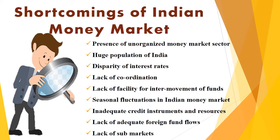Then there is the problem of inadequate credit instruments and resources. The funds available with the organized sector are inadequate to meet the requirements of agriculture, small-scale industries and other industrial units. The lack of correlation between funds and credit instruments is also responsible for the slow growth of the Indian money market. Additionally, the Foreign Exchange Regulation Act and exchange controls restricted the inflow of foreign funds into India, making the exchange rate of the rupee and foreign currency unstable, which has also affected foreign trade in India.